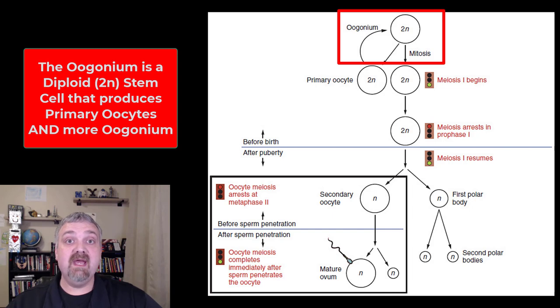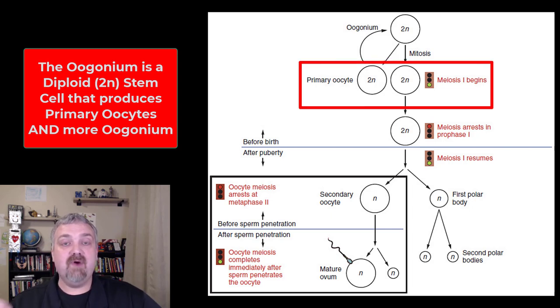Notice we have mitosis. That 2N means these cells are diploid. They have two sets of chromosomes, so when they undergo mitosis, now we have two primary oocytes that are still diploid. Notice that the one on the left becomes the oogonium again, so that is how stem cells work. They produce a new cell plus another stem cell, so they can constantly be churning out new cells.